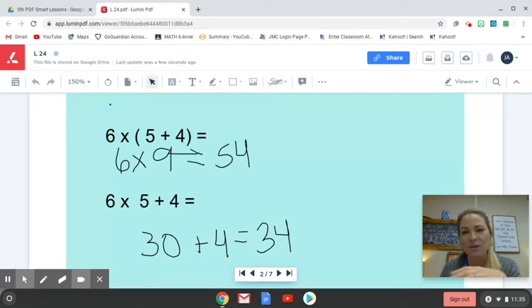I did this work ahead of time, but I just wanted to pause here for a moment and show you doing the work within parentheses does make a difference doing that first. So looking at these two expressions, they contain the exact same digits. We have a 6, 5, and 4, 6, 5, and 4, same operation, multiplication, addition.